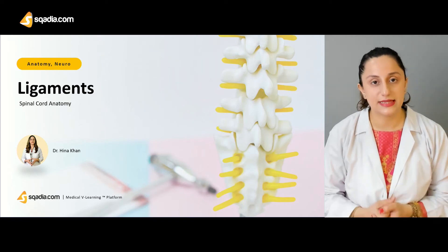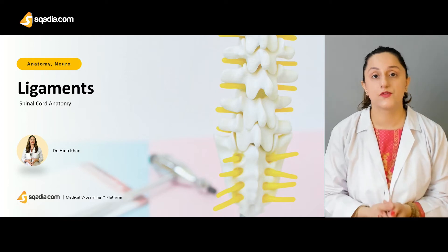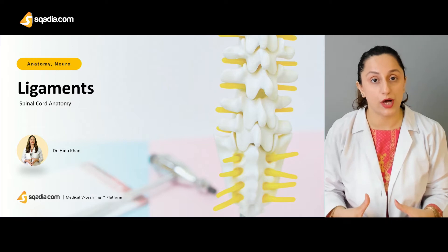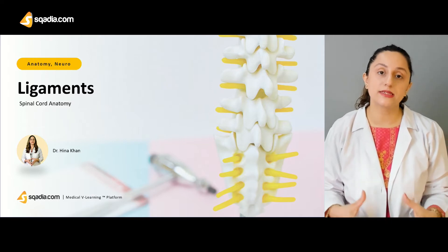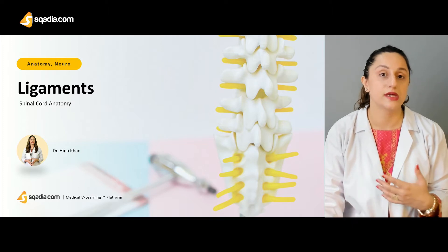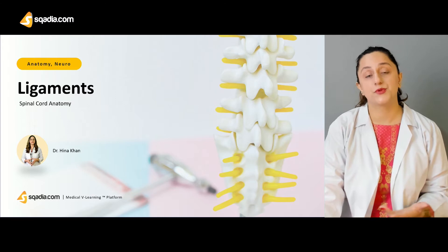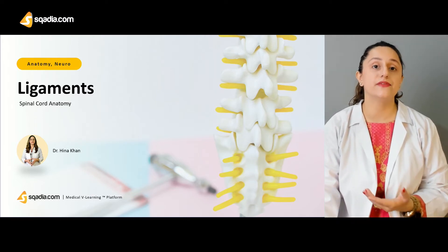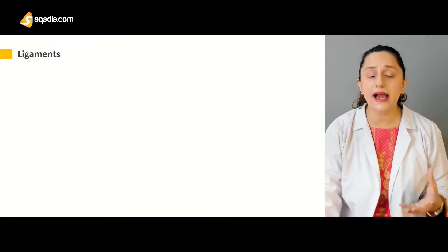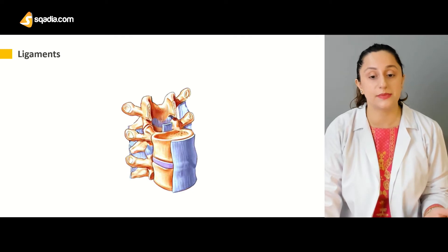There are certain ligaments that are attached to the vertebral bodies for the purpose of stability. There are multiple joints present in the vertebral column, so it has to be provided with a lot of ligament structures. They also provide shock absorbing properties and transmit weights to the lower limbs, so there has to be a lot of stability throughout this complete process.